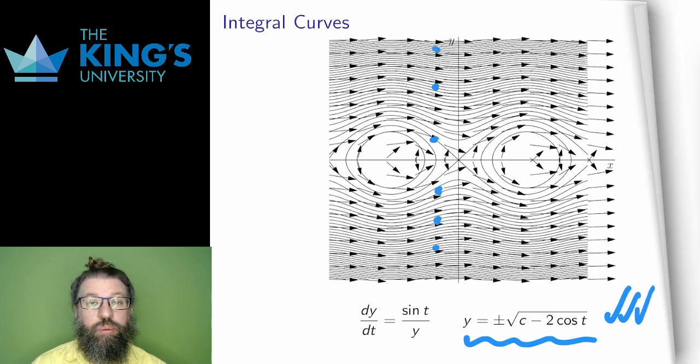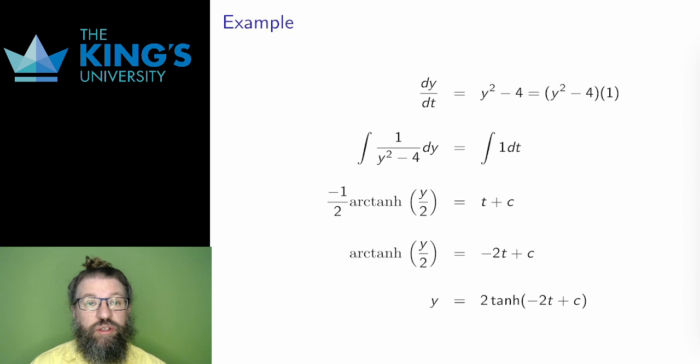Here is another separable equation. This one is actually an autonomous equation, but I can solve those as separable as well. I just treat the second part, g of t, as constant 1. And then I separate y on the left and t on the right and integrate, in y on the left and in t on the right.